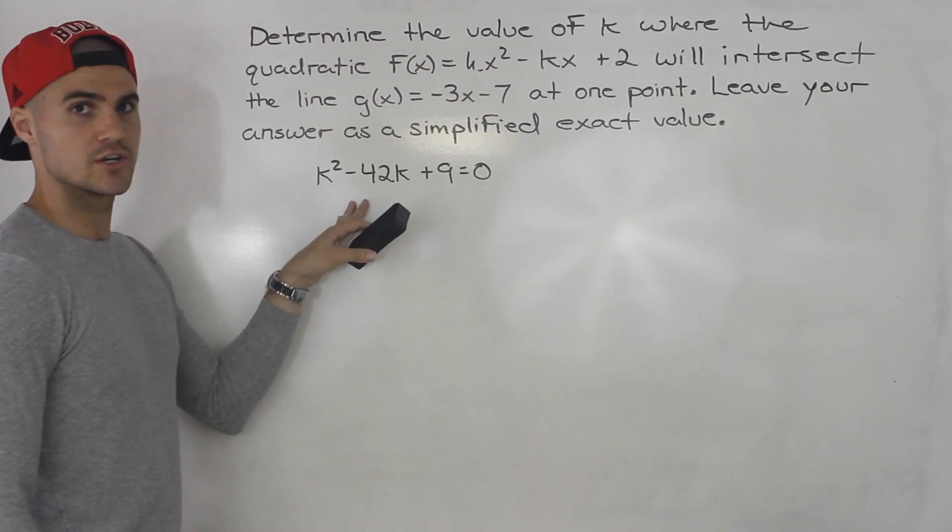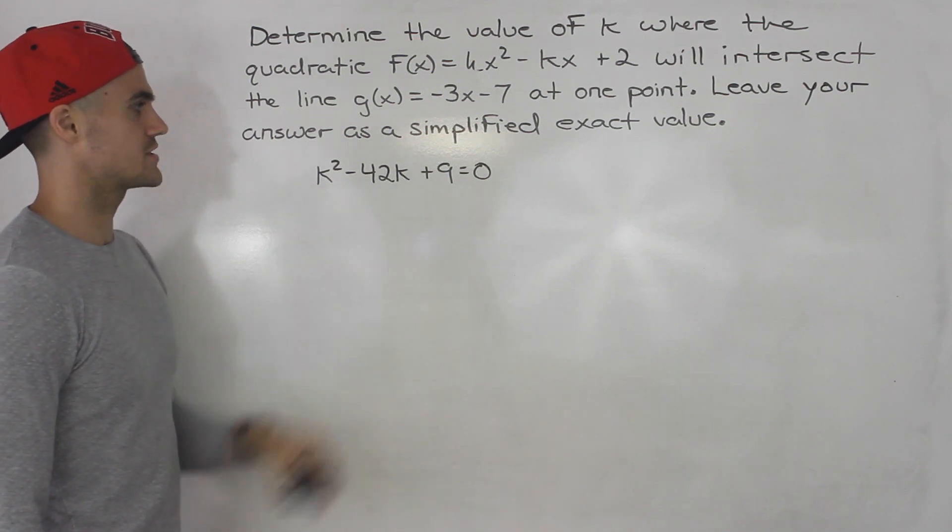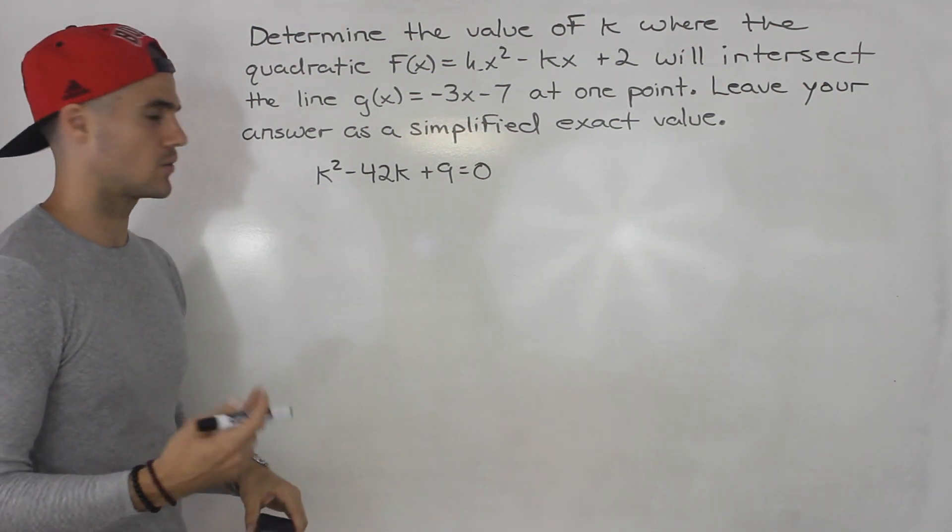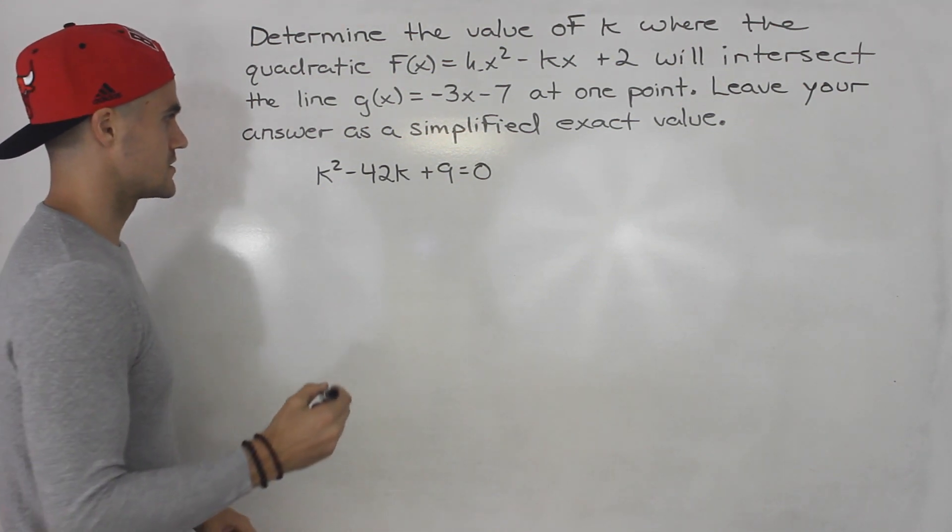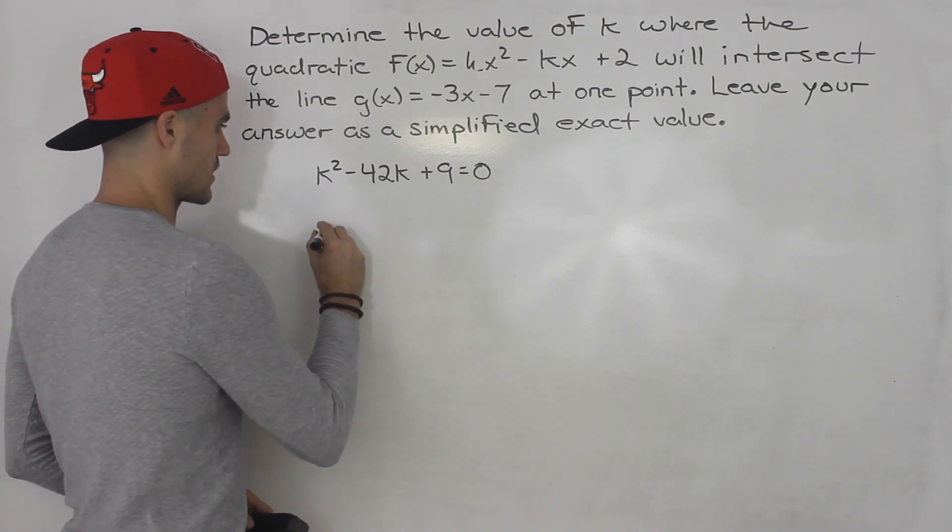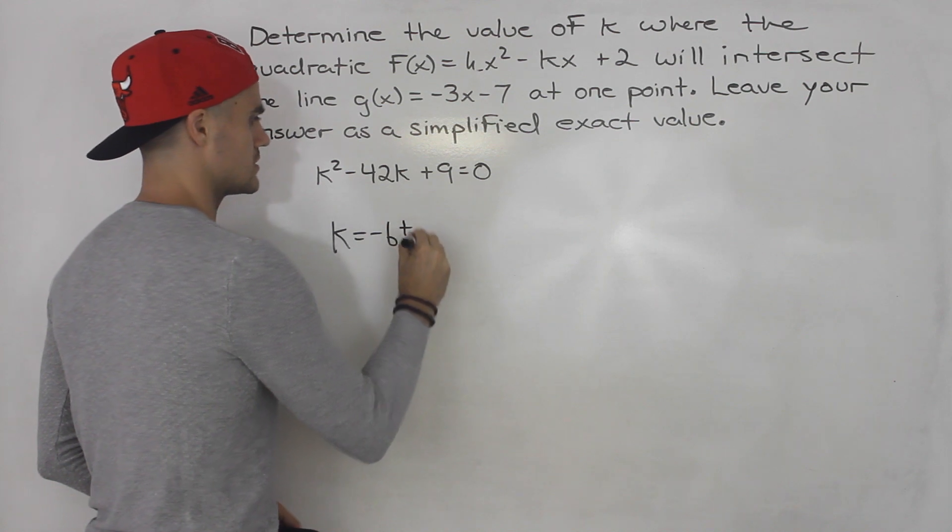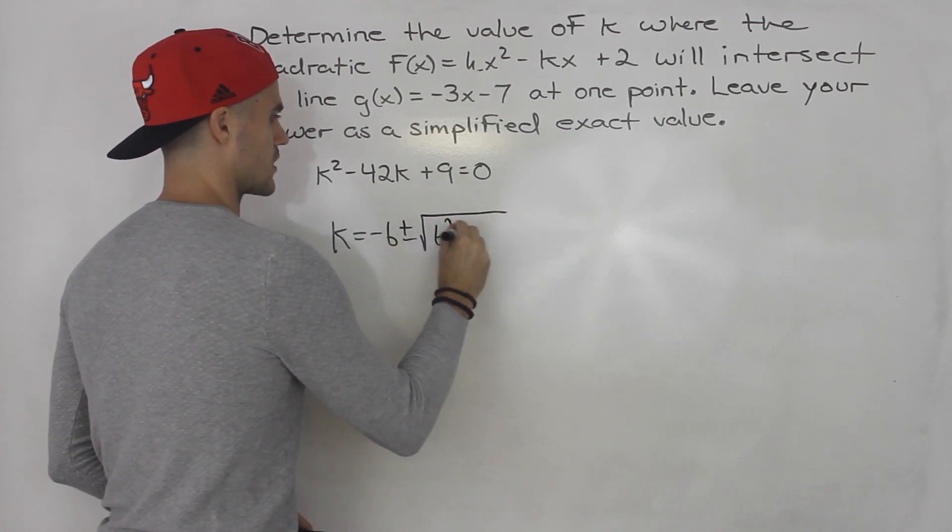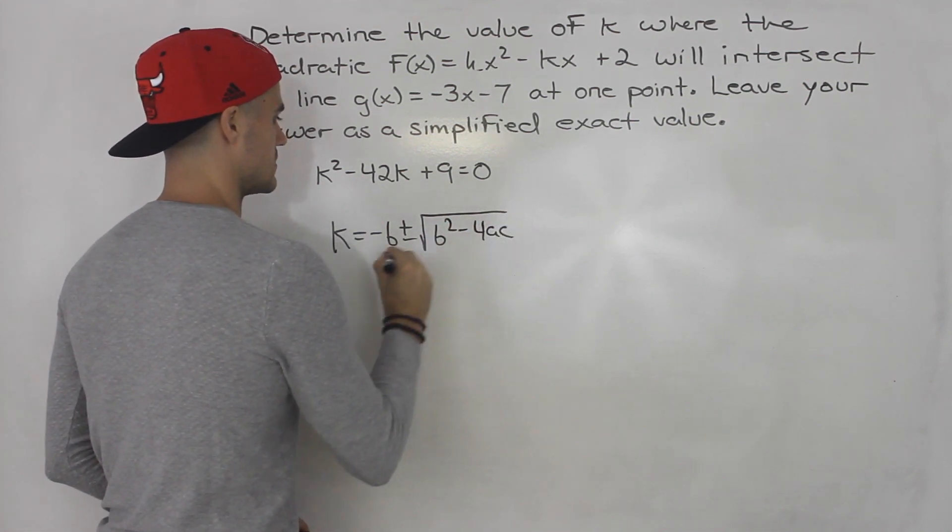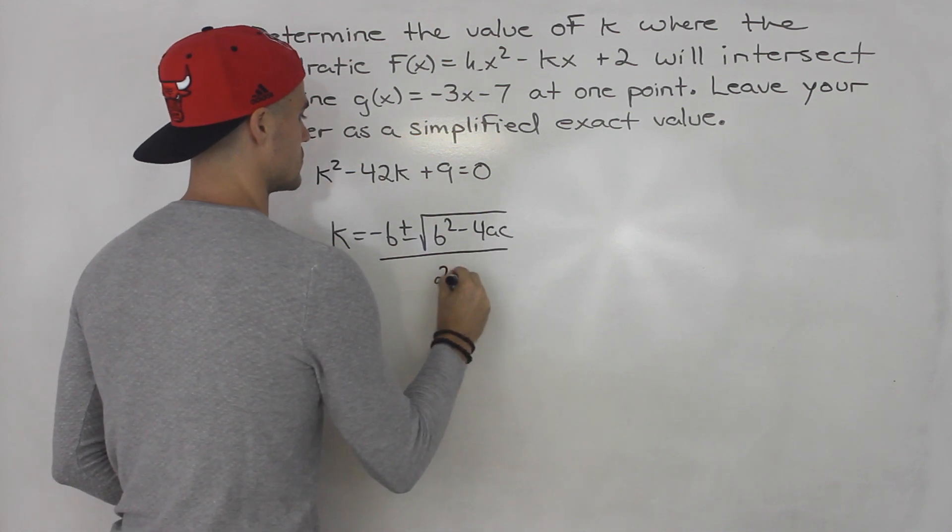So we're left with this quadratic equation now to solve. And this actually doesn't factor smoothly, so we're going to have to throw it in the quadratic formula. So we know, in this case, quadratic formula is going to be what? k is negative b plus or minus b² minus 4ac all over 2a.